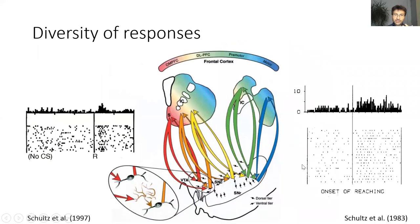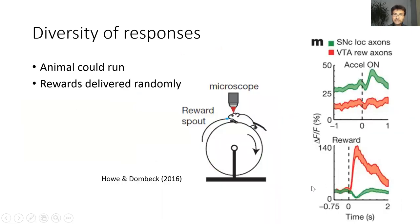Given the diversity of connections of these dopaminergic neurons, it is perhaps not surprising that there is also diversity in their responses. The activity of dopaminergic neurons encoding reward prediction error, which Stephen showed, was recorded in VTA. By contrast, it has been known for a long time that dopaminergic neurons in SNC respond to movement. A particularly nice study which directly compared responses in these two areas was performed by Hove and Dombeck.